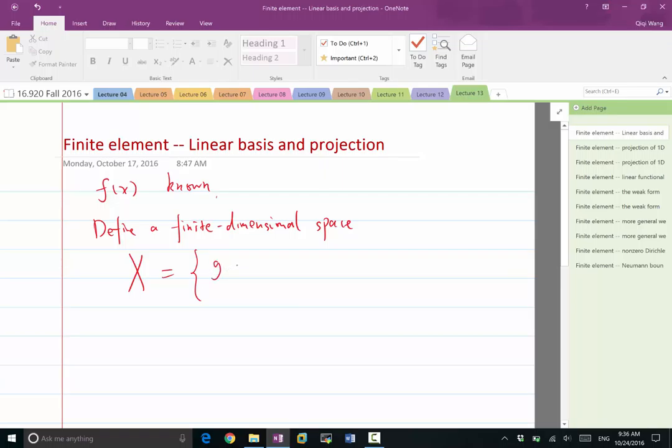can be represented as a linear combination, where i goes from 1 to n: sum of g_i * phi_i(x).